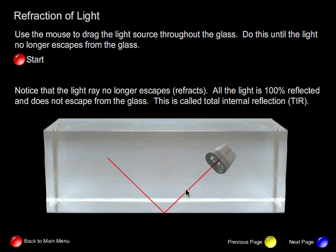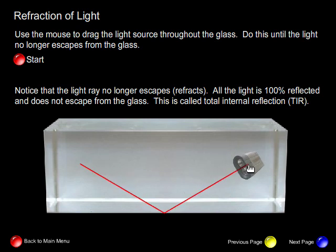Notice at this point that all the light is 100% reflected. If we increase this angle, it's still 100% reflected. This glass surface acts like a mirror. When all the light is 100% reflected, we call this total internal reflection. This is an important concept for you to understand in regards to diamonds.